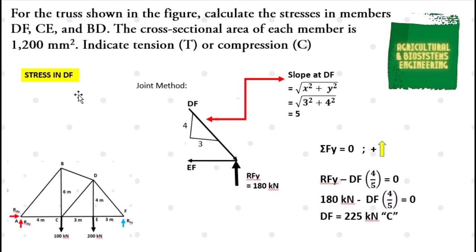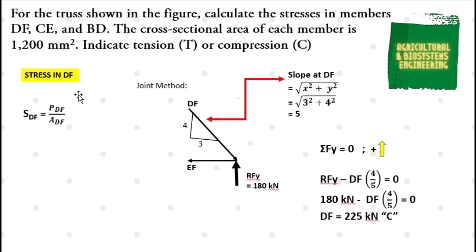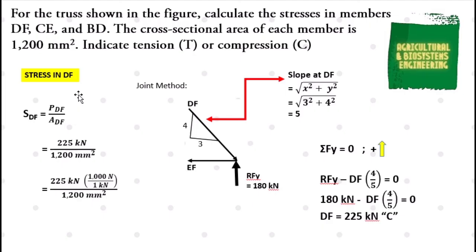After solving the load at DF, we solve its stress: stress at DF = load at DF / cross-sectional area = 225 kilonewton (225,000 newton) / 1200 square millimeters = 187.5 megapascal — compression, because load DF goes towards joint F.